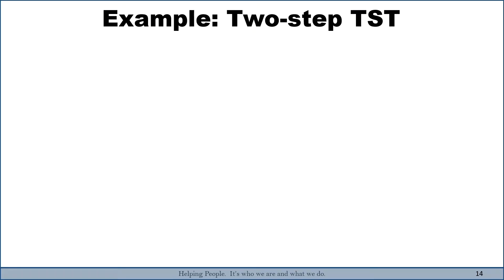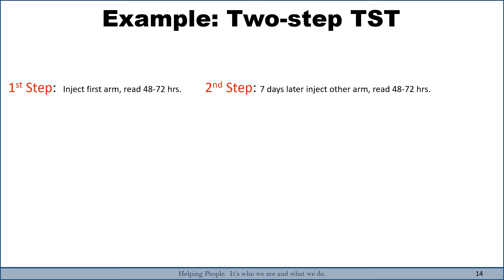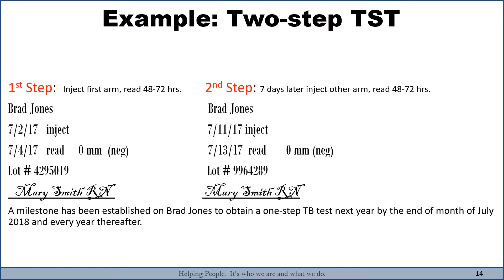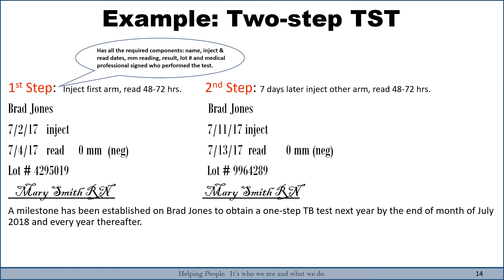Here is an example of the two-step TST. Our client is Mr. Brad Jones. In step one, he was injected and read at 48 hours by licensed individual Mary Smith, who signed her name and recorded zero millimeters — characterized as negative — along with the lot number. In step two, seven days later, he was injected in the other arm and read 48 to 72 hours later, again negative, with the lot number and Mary Smith's signature. We have now established a milestone for Mr. Jones to obtain a one-step TB test the following year by the end of July 2018, and every year thereafter.